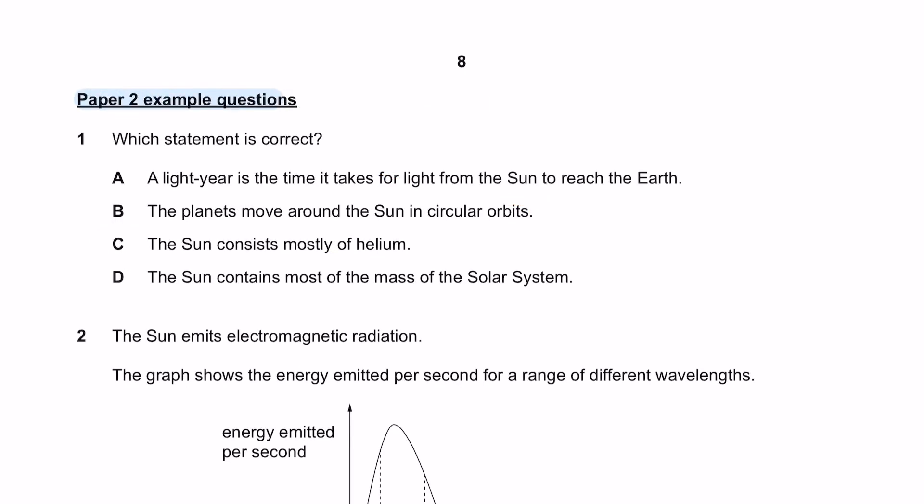Next, moving on to paper 2 example questions. Question 1. Which statement is correct? A light year is the time it takes for light from the Sun to reach the Earth - this is wrong because a light year is a measurement of distance and not time. The sun contains most of the mass of the solar system - this is correct. So the answer here is D.